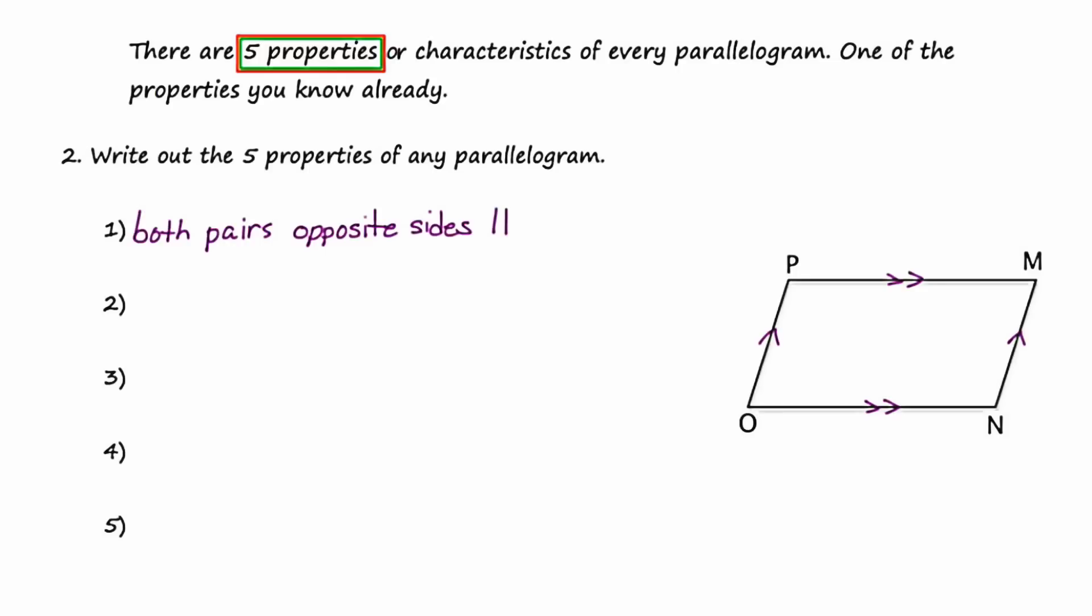Let's move to the second property. The second property is that if a figure is a parallelogram, then both pairs of opposite sides are going to be congruent. Let's mark those with tick marks as well. The opposite sides would be PO and MN, and PM and ON.